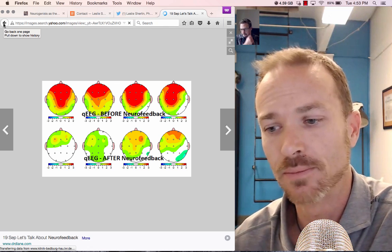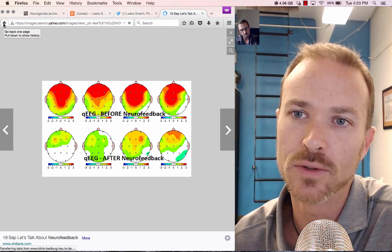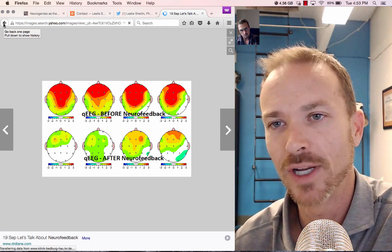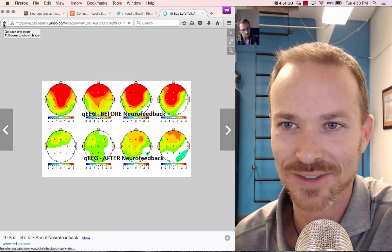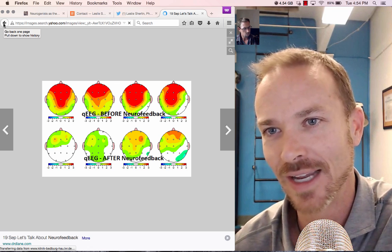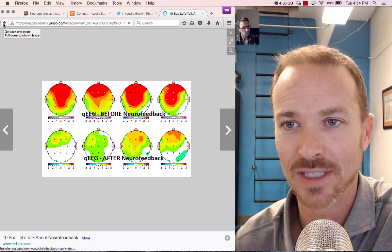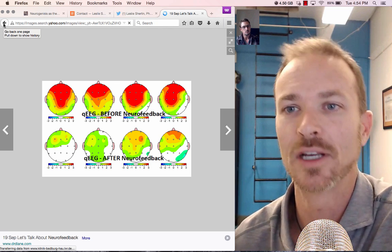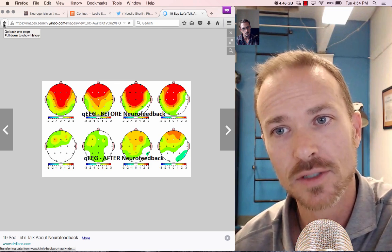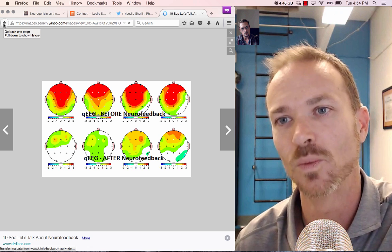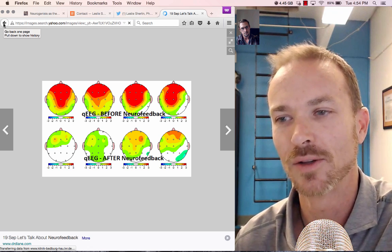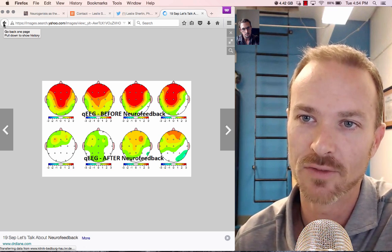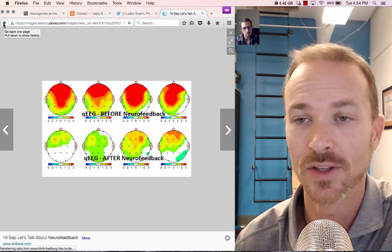And also trying to minimize the impact of other structures taking over those functions. So the brain is always looking for the path of least resistance. If one area is damaged and another surrounding area can take over that role and function, then they will. And that becomes maybe less efficient but it's effective. And so if it is effective, then the brain may not produce or put the necessary effort towards rehabilitation on the damaged area because that function is being served elsewhere.